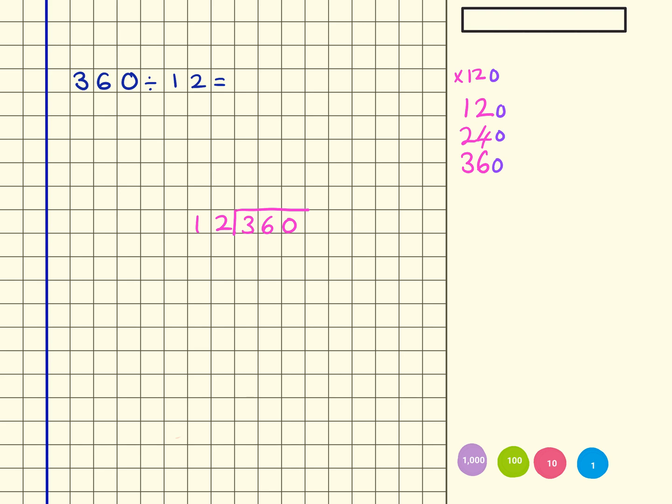Because if 12 times 3 equals 36, then 12 times 30 equals 360. So the missing number here is actually 30.